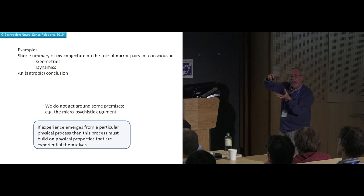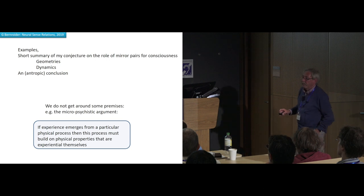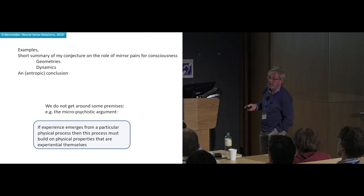If experience emerges from a particular physical process then this process must build on physical properties that are experiential themselves. There is no miraculous emergence. You know? If a line, four segments into a square and all the segments are black, then the square cannot all of a sudden be red. So that the square becomes red the segments have to be red, the dire line. Otherwise there is some miracle going on. And that's the core of the essence of this micro-psychistic point there.